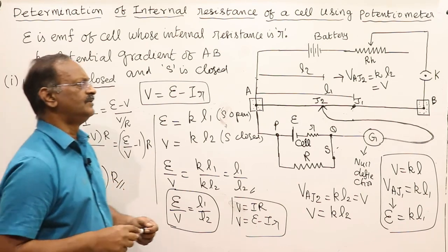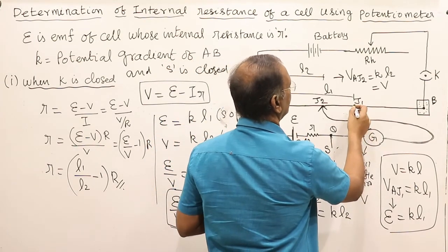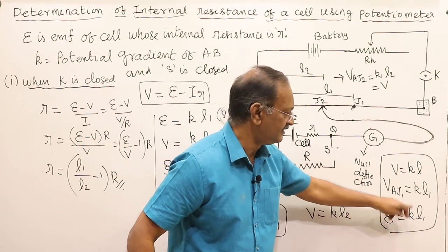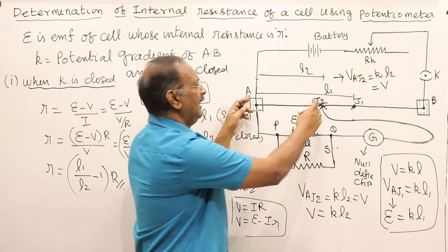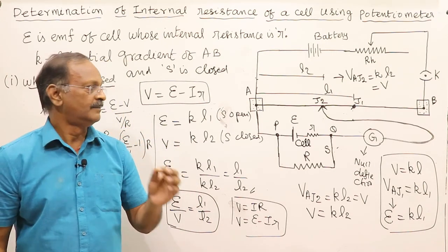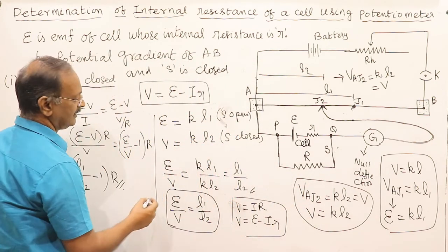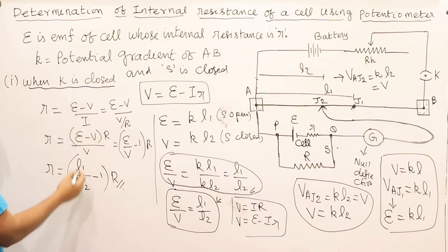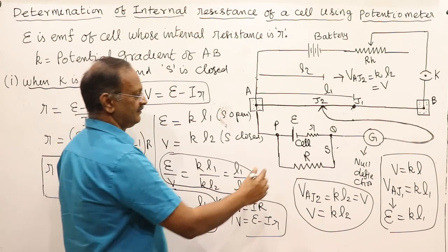To summarize and avoid confusion: when S is open and K is closed, balancing point J1 gives the EMF of the battery, so EMF = K×L1. When S is closed, balancing length L2 gives the terminal potential difference of the cell. Dividing both equations gives the ratio, and substituting into the internal resistance formula gives: r equals (L1/L2 minus 1) times R, where R is the external resistance connected across the cell.